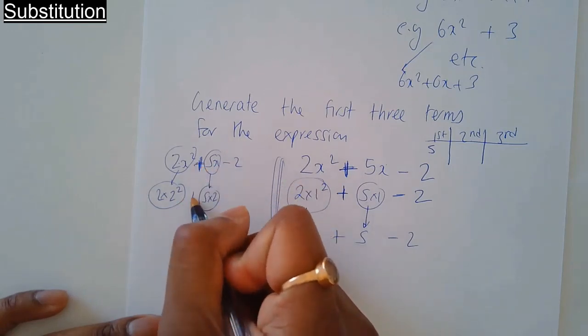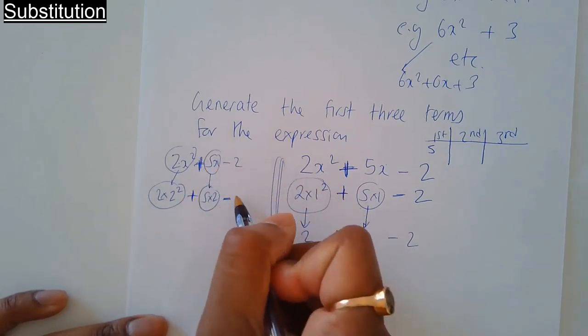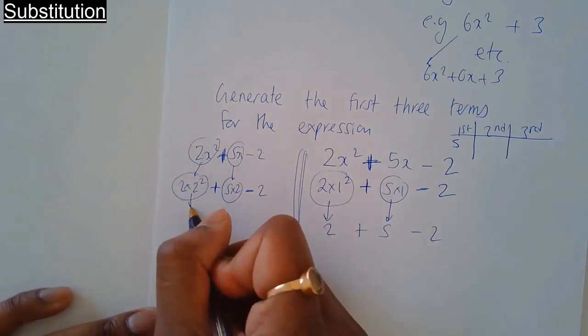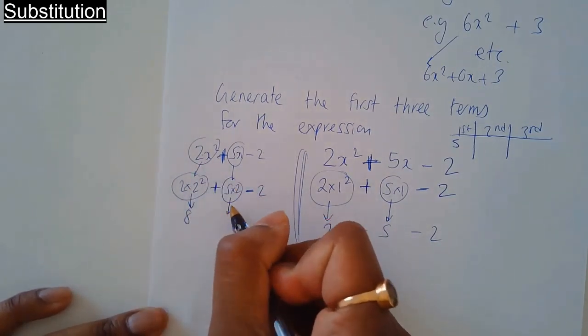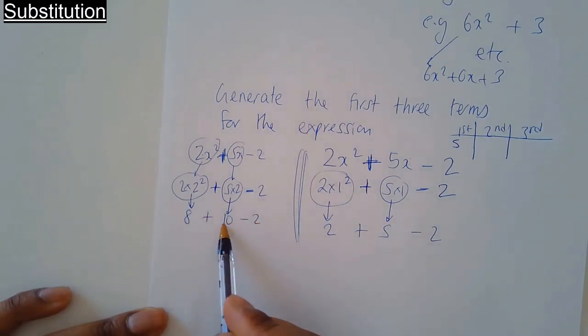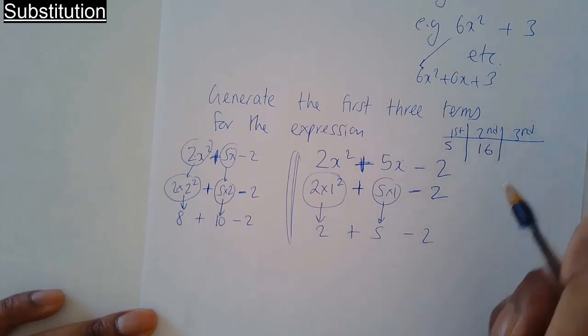Don't forget the plus and the minus and the 2. 2 squared is 4, 4 times 2 is 8, 10, 18 take away 2 is 16. That's the second term.